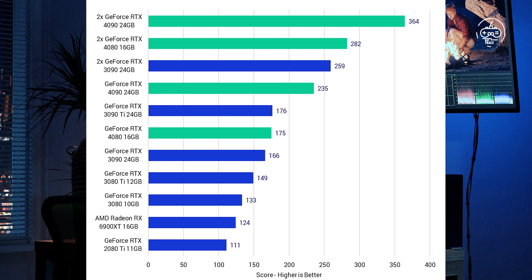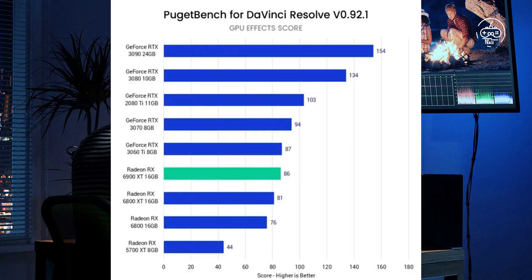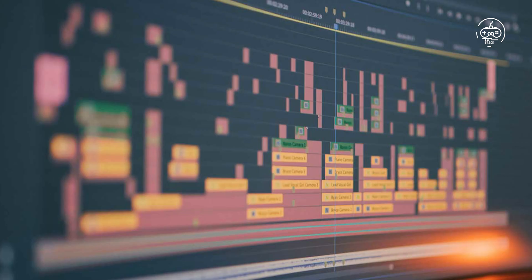While the system requirements for motion design and compositing software like After Effects heavily favor the CPU and amount of system memory, they do use graphics acceleration for specific features like GPU-accelerated effects. We recommend targeting 8GB of VRAM unless you plan to work in higher resolutions and bit depths, or use After Effects in conjunction with 3D rendering plugins like Cineware or GPU-accelerated third-party plugins such as Neat Video DeNoise, that depend more heavily on the graphics card's performance and VRAM capacity.